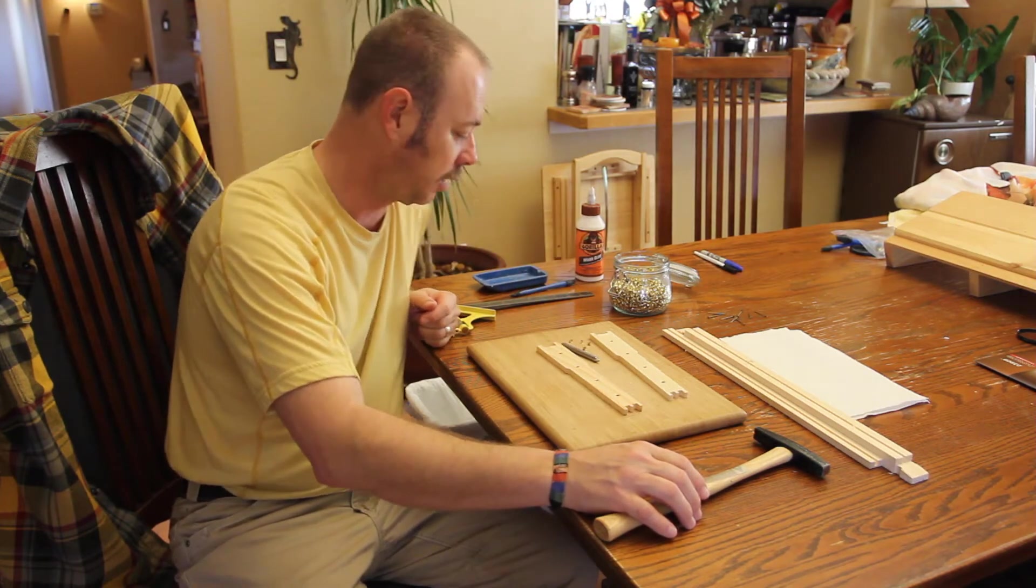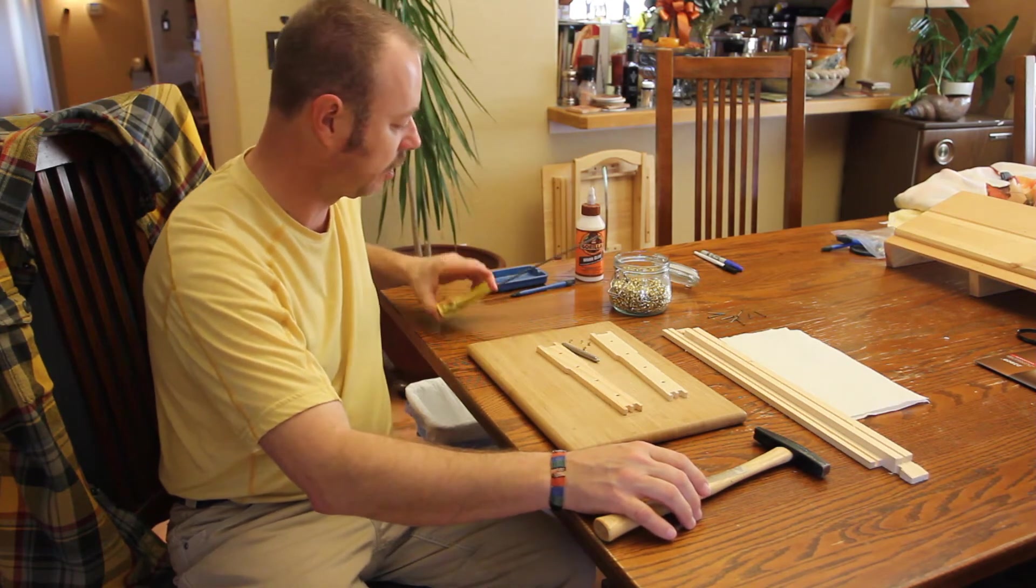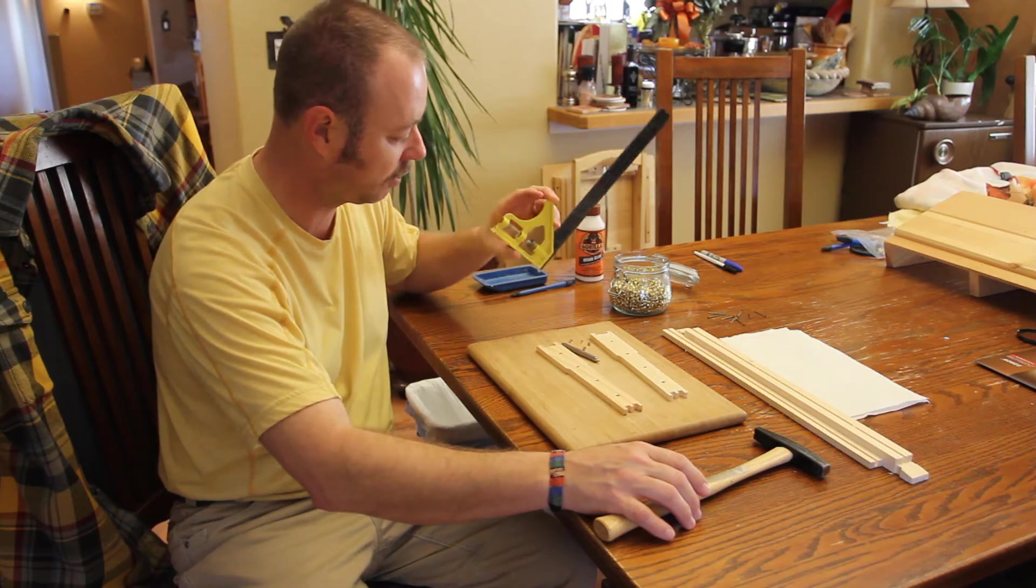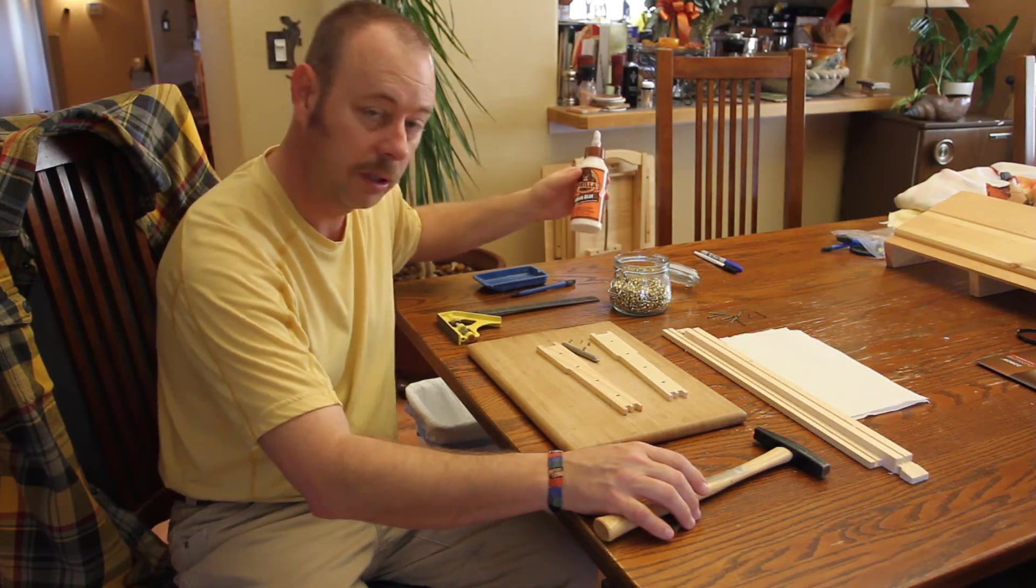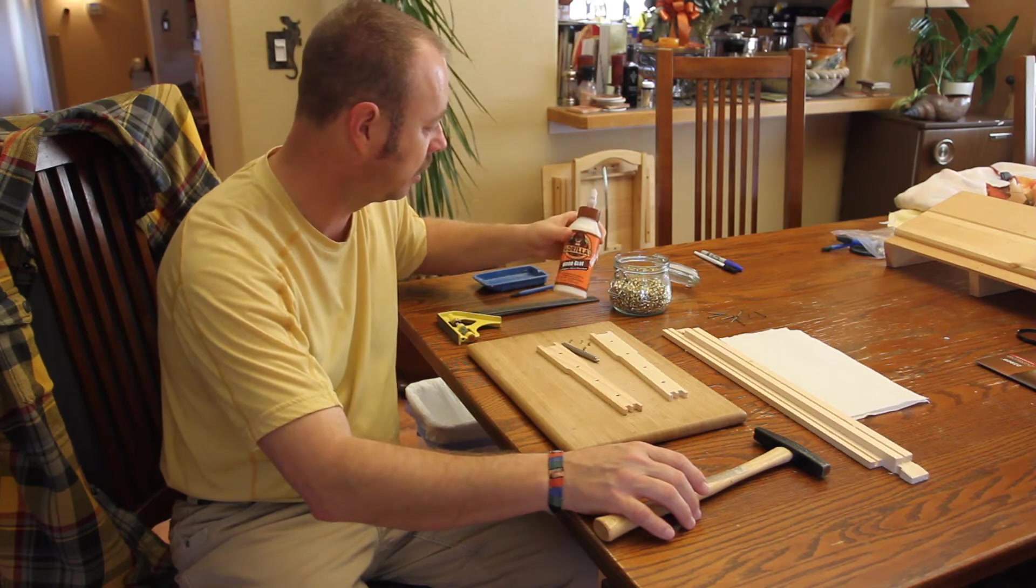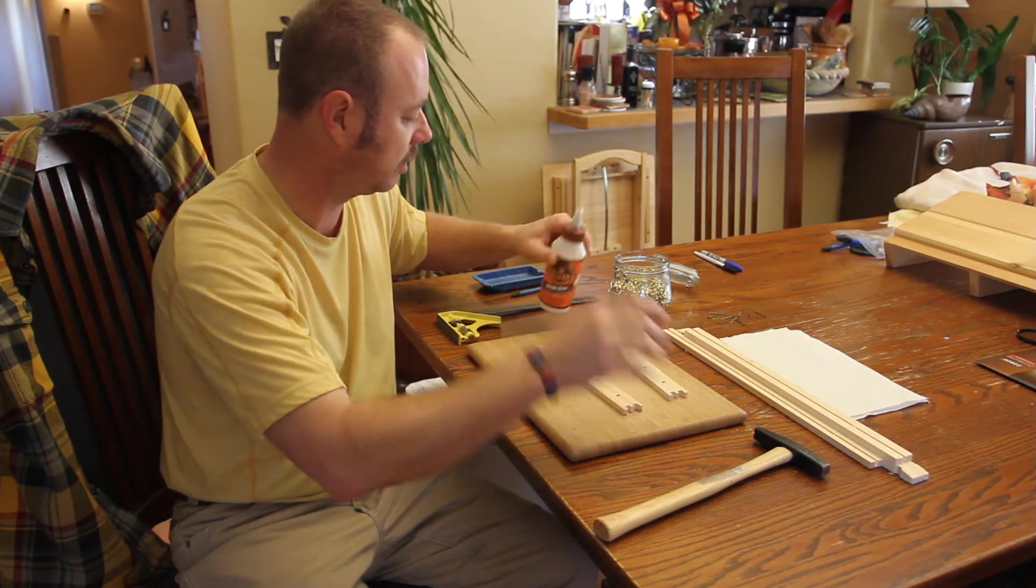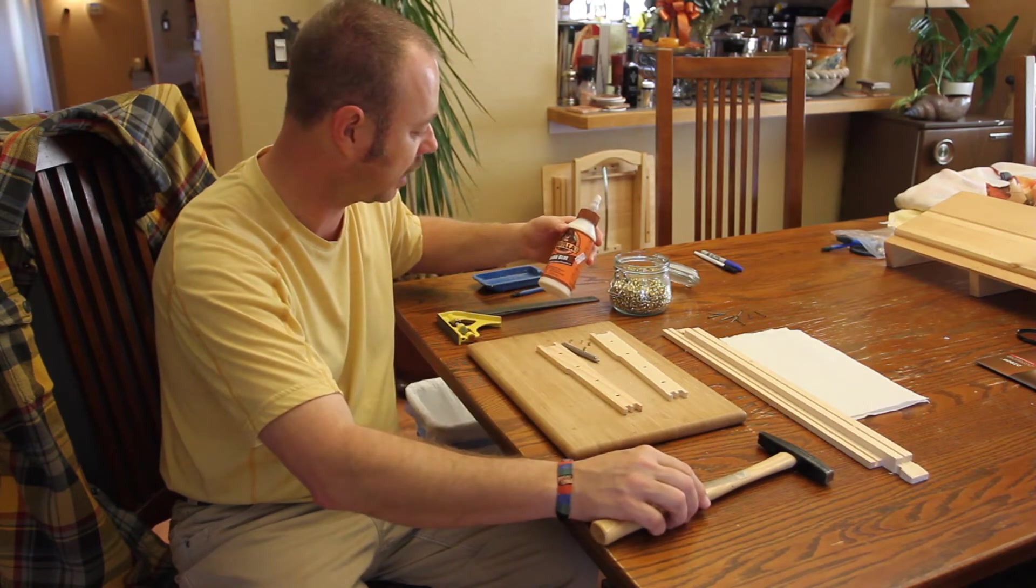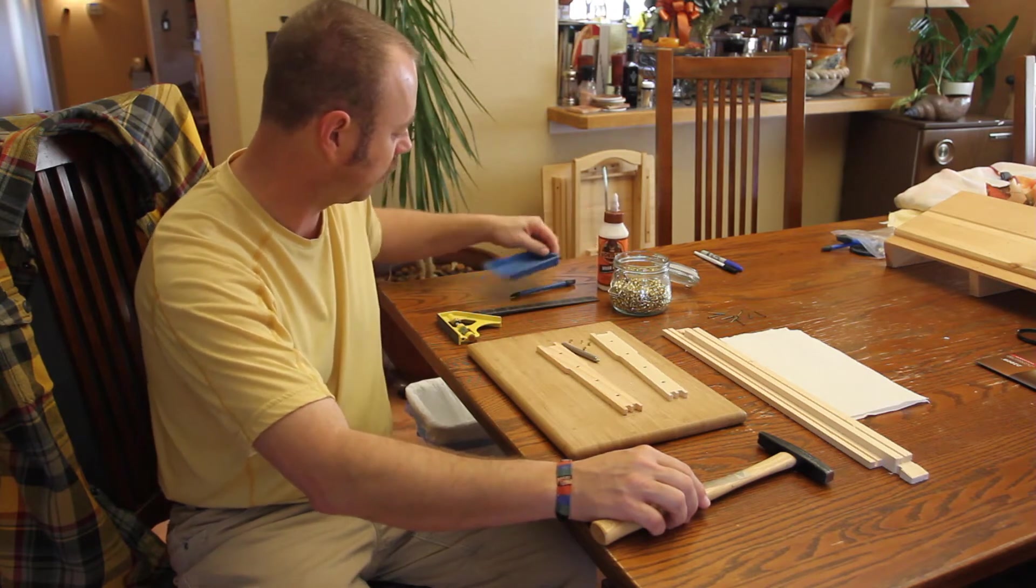You're going to need a square—this type of square helps a lot. You'll also need some glue, either with an applicator tip like this, or you can use a silicone pan.